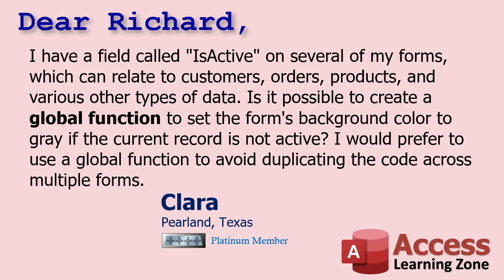Today's question comes from Clara in Pierlin, Texas, one of my Platinum members. Clara says: I have a field called isActive on several of my forms, which can relate to customers, orders, products, and various other types of data. Is it possible to create a global function to set the form's background color to gray if the current record is not active? I would prefer to use a global function to avoid duplicating the code across multiple forms.